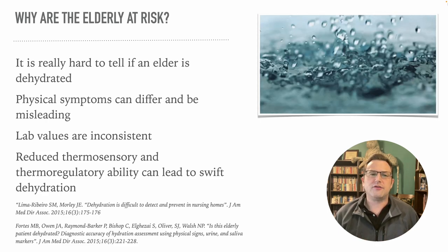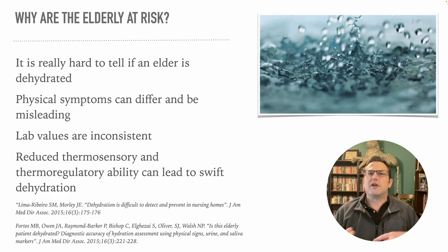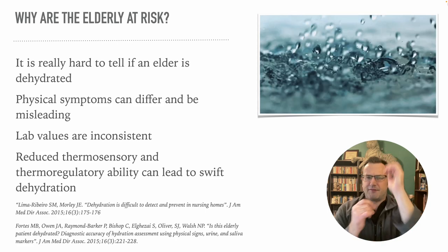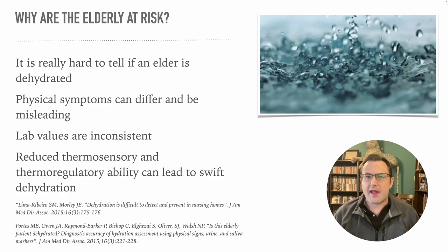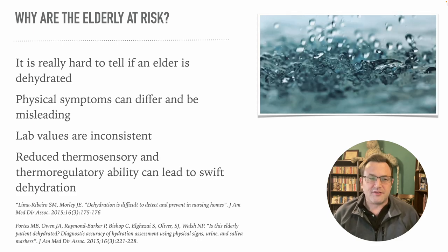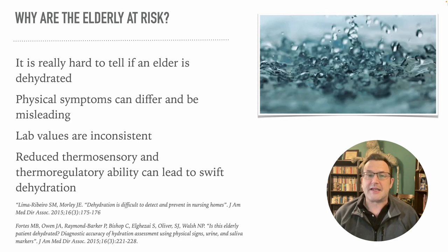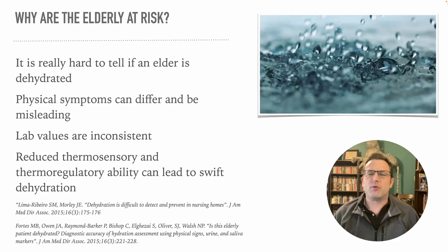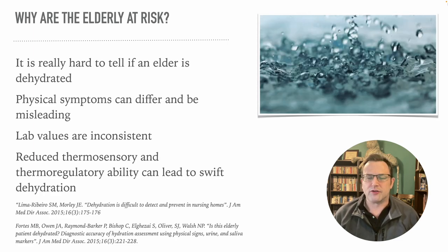It's really hard to tell if an elder is dehydrated. The skin turgor test — checking for tenting — may not be reliable because their skin is already kind of dry, thin, and a little bit looser. Physical symptoms can differ and be misleading, and the complaints you'd normally see for someone who is dehydrated may not exhibit the same way in an elder patient.